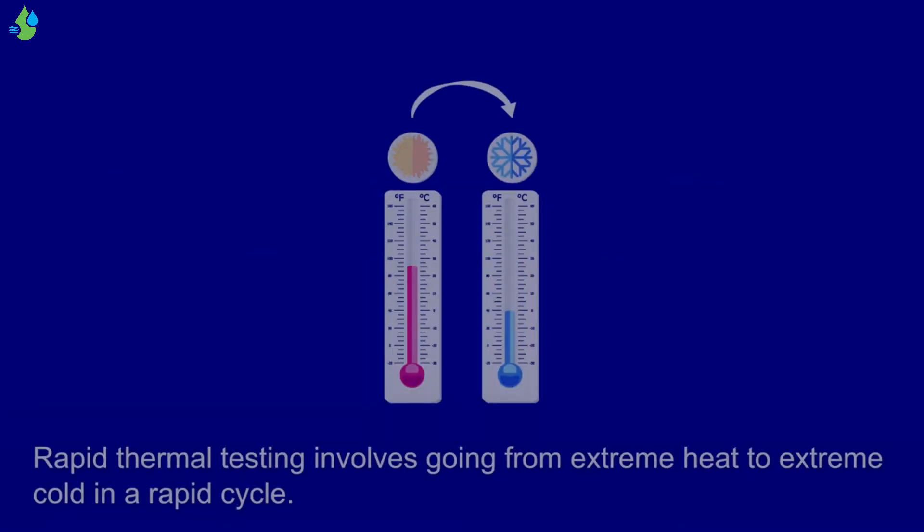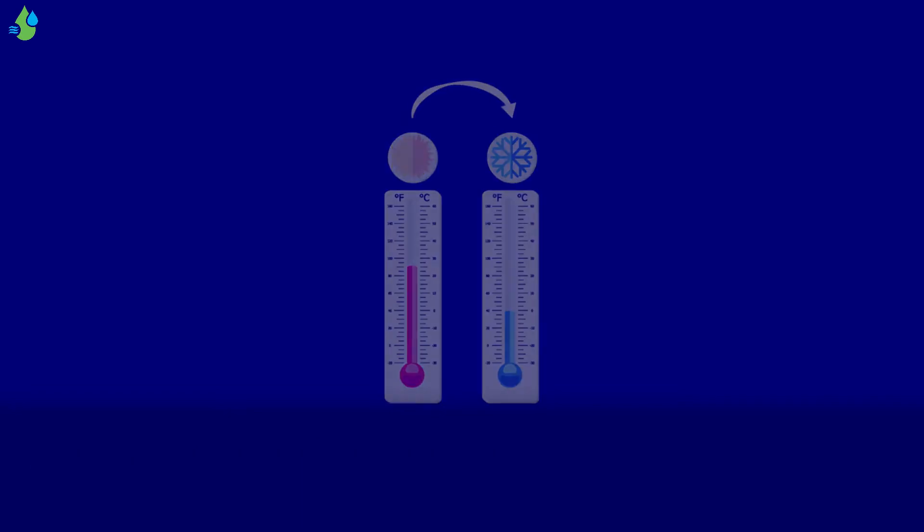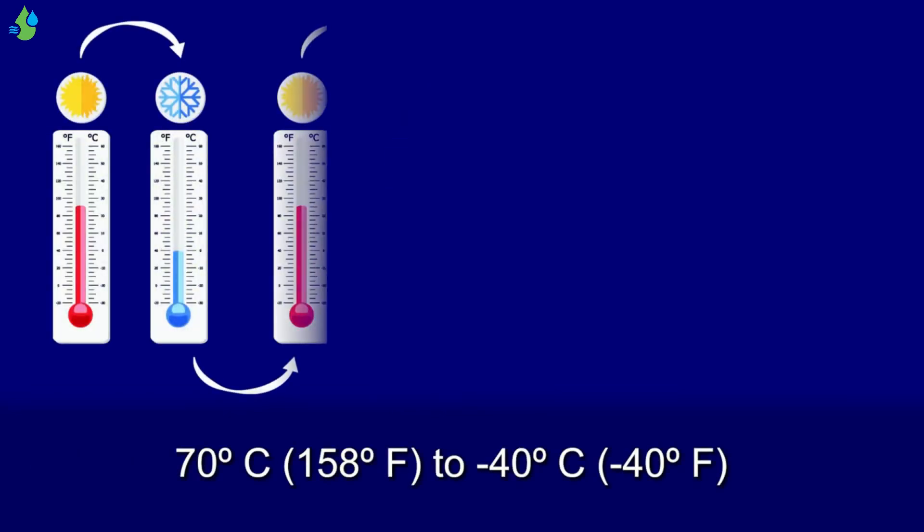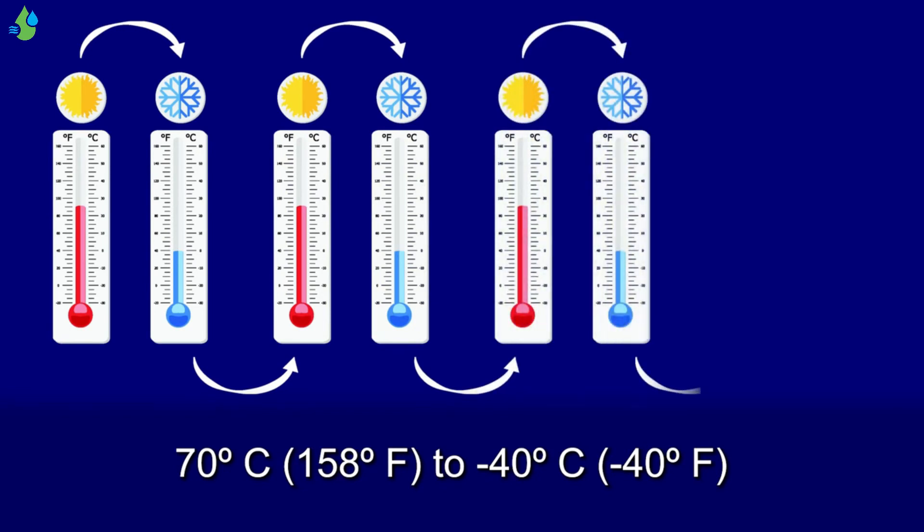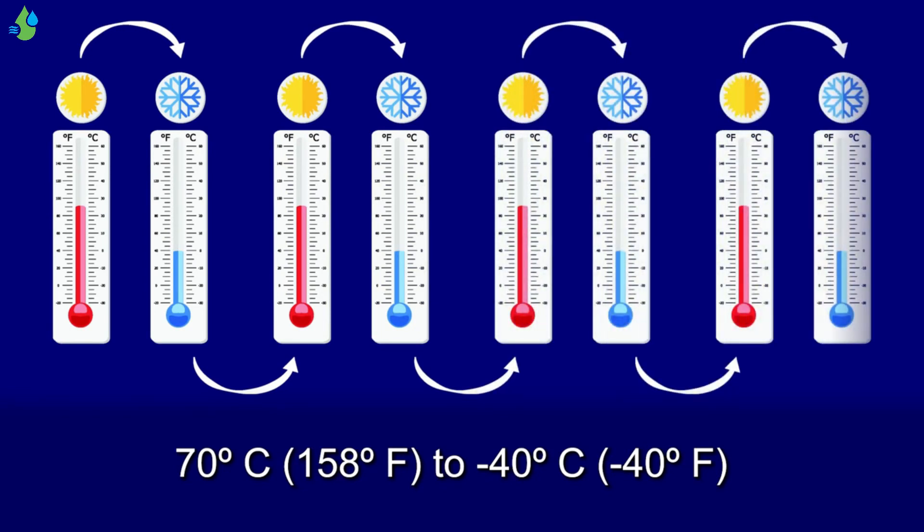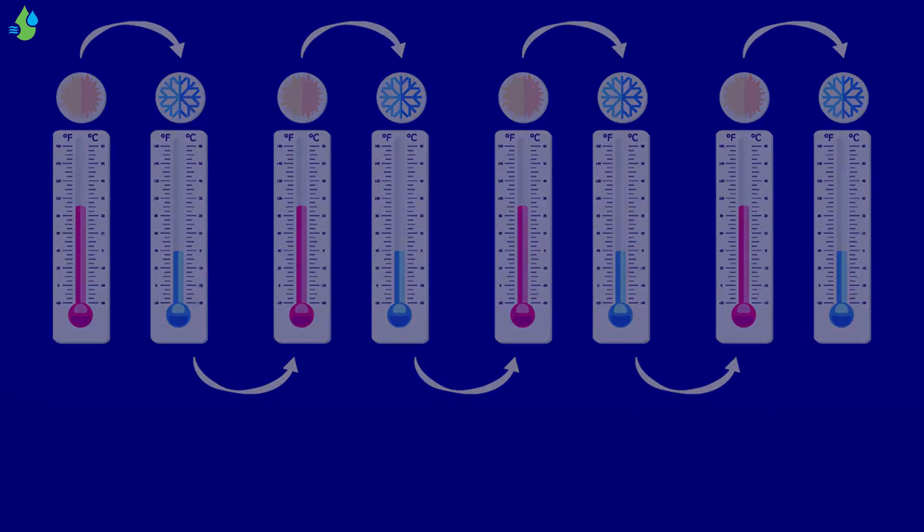Temperature Cycling. Rapid thermal testing involves going from extreme heat to extreme cold in a rapid cycle. The temperature in the chamber was set to 70 degrees centigrade, 158 degrees Fahrenheit, and over a period of 45 minutes, the temperature was dropped to negative 40 degrees centigrade, negative 40 degrees Fahrenheit. This was repeated four times. No functional issues occurred.